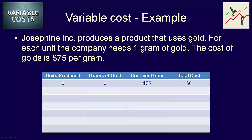Well, if Josephine produces zero products, gold will cost them nothing. If Josephine produces one product, they'll use one gram of gold and that will cost them $75. And if Josephine Inc. produces 50 or 100 products, the company will use 50 or 100 grams of gold and it will cost a total of $3,750 for 50 and $7,500 for 100 grams, which is, of course, 100 grams of gold multiplied by $75 per gram.